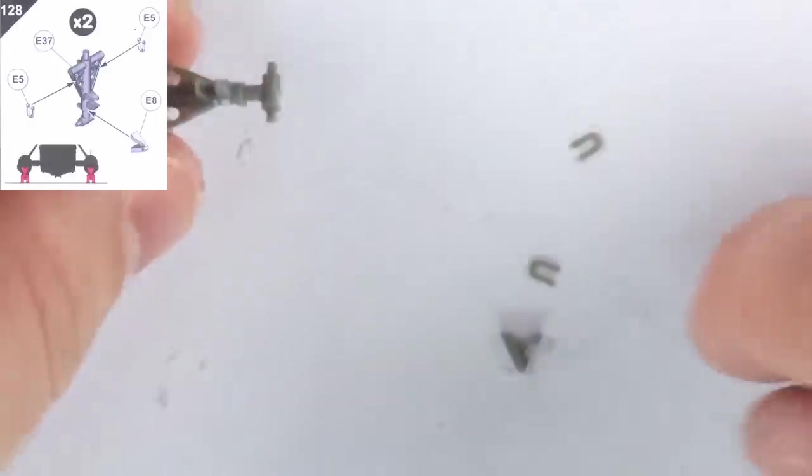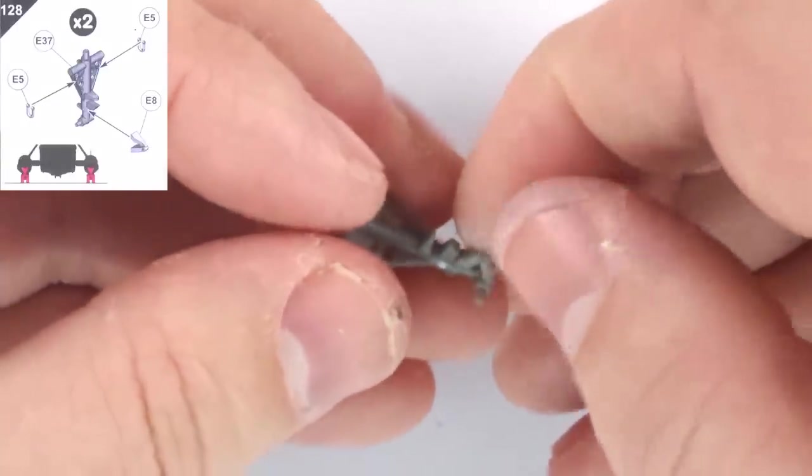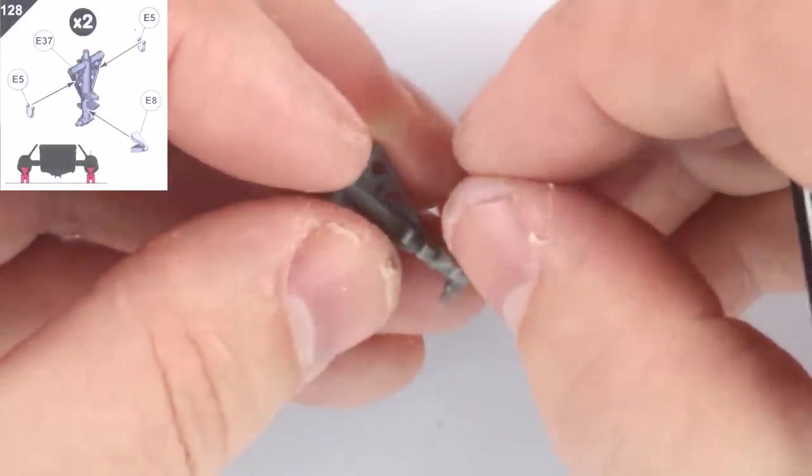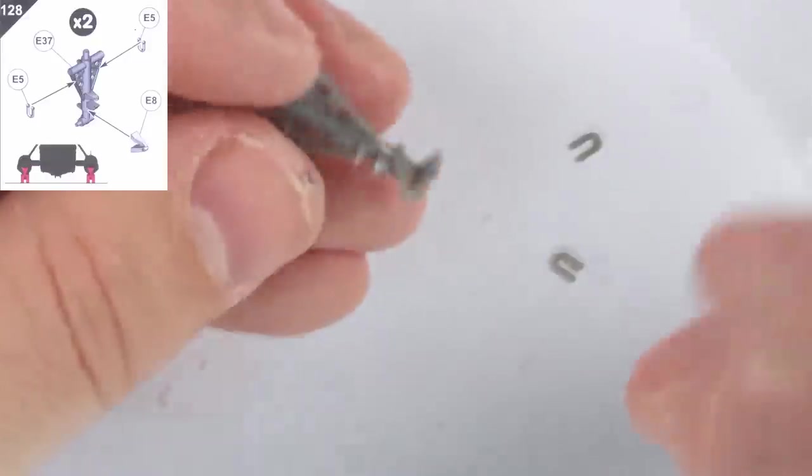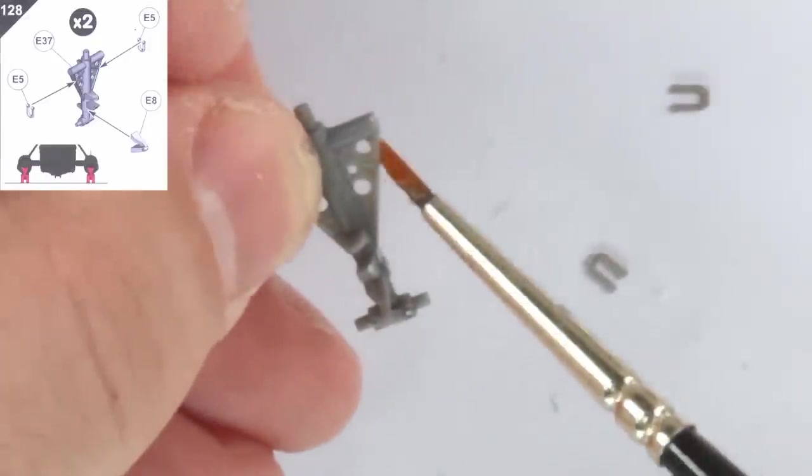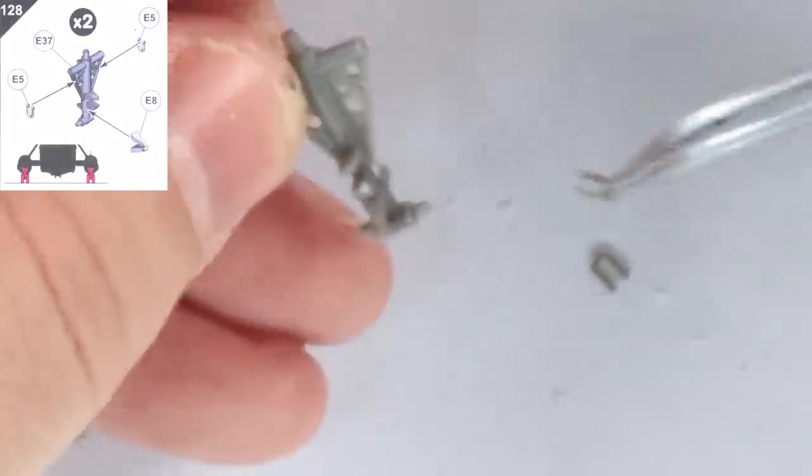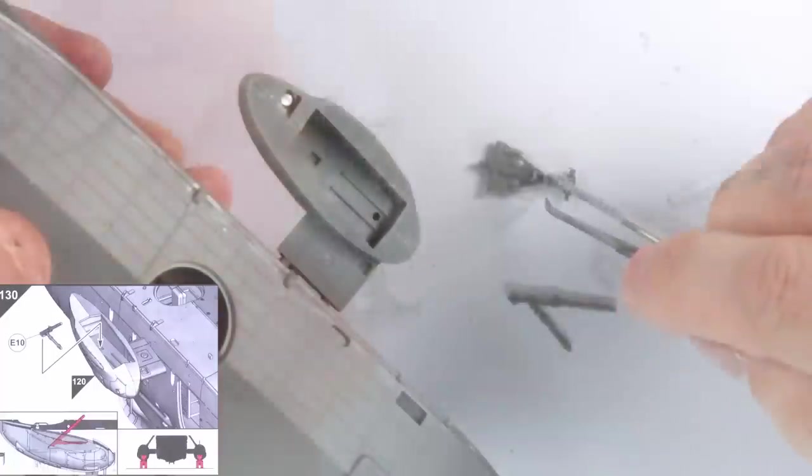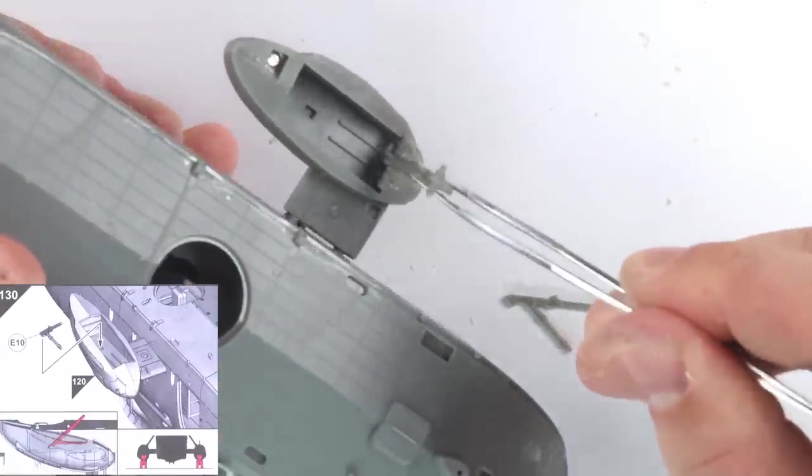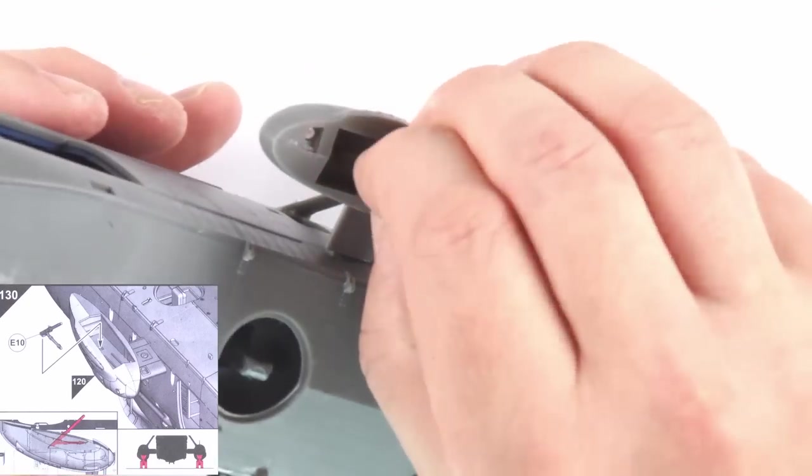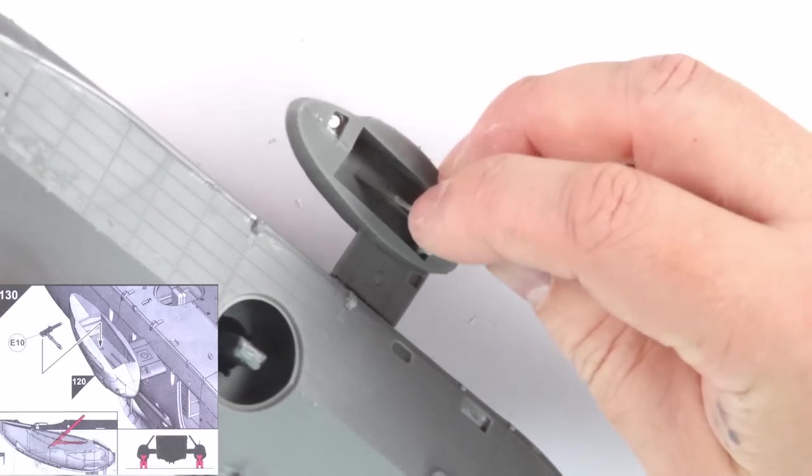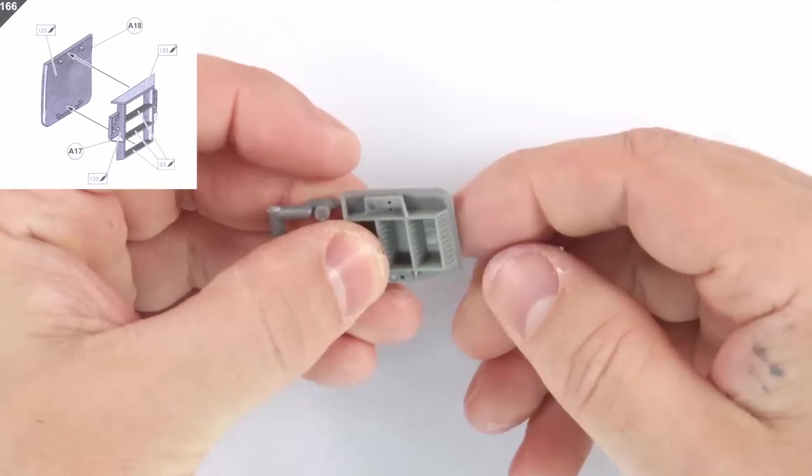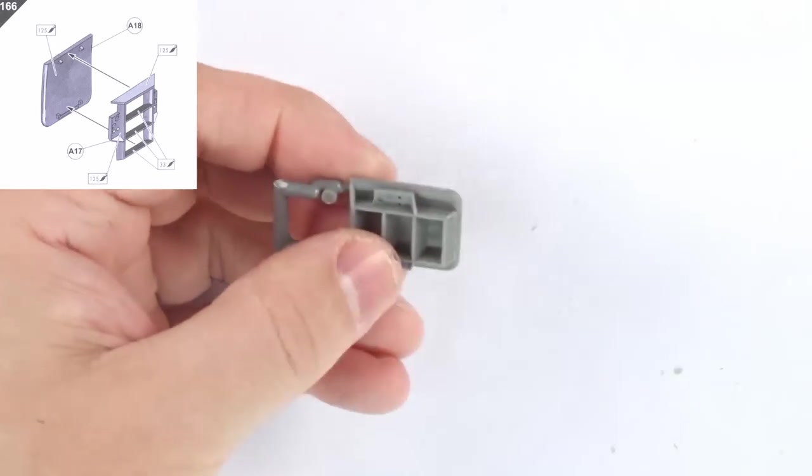Keep your tweezers handy though for the undercarriage scissor linkages and tie-down hoops. I placed the undercarriage in the bays to cement them at the right angle, but then removed them for painting. I glued the entrance steps to the door, but I still got them attached to the sprue here for painting.